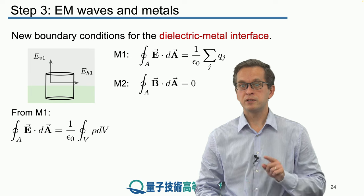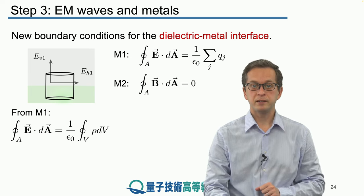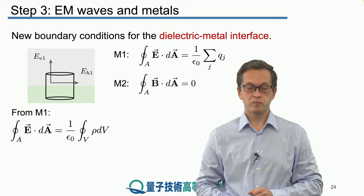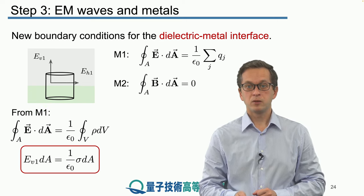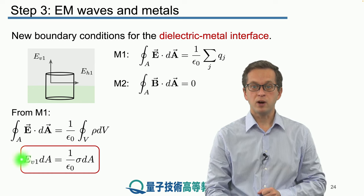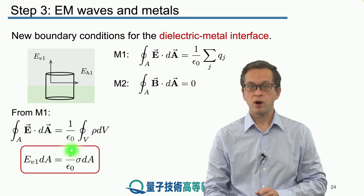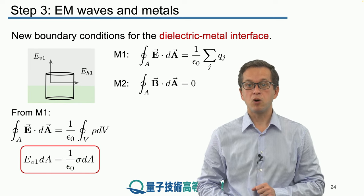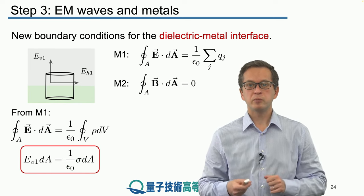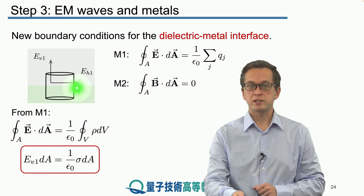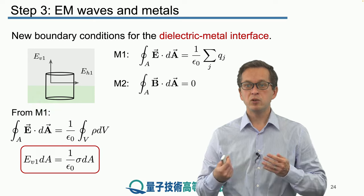Now, we already said that there are no electric fields in the metal. Therefore, automatically the flux through the bottom part of the cylinder will be zero. So, when we write out Maxwell's first equation, we get that E_V1 is equal to 1 over epsilon naught times this sigma. Now, this sigma represents the charge density on the surface. Here, we skipped a few steps.